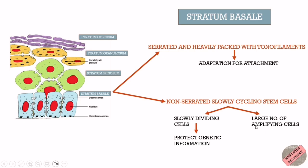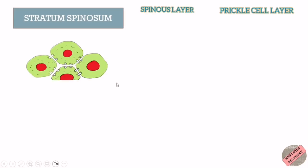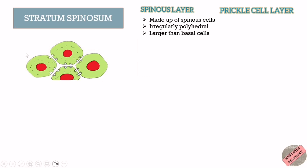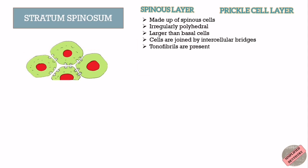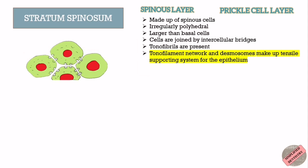The next layer is stratum spinosum, made up of spinous cells which are irregularly polyhedral and larger than the basal cells. Under light microscopy, the cells appear joined by intercellular bridges, and tonofibrils seem to course from cell to cell across these bridges. Electron microscope studies have shown that the intercellular bridges are desmosomes and the tonofibrils are bundles of tonofilaments. The tonofilament network and the desmosomes appear to make up a tensile supporting system for the epithelium.